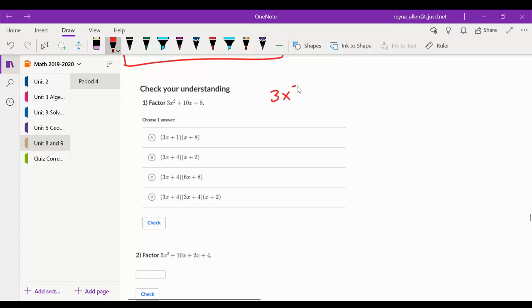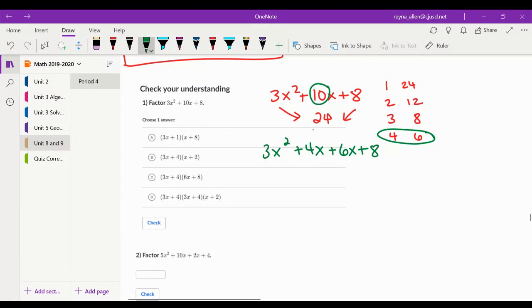So we get 3x squared plus 10x plus 8. So step number 1, multiply a and c, 24. Factors of 24, we got 1 times 24, we got 2 times 12, we got 3 times 8, and then we got 4 times 6. So one of these needs to add up to 10. Well, it's not going to be that one, it's not going to be that one, it's not going to be that one. So it's going to be this one. So we are going to split 10x into 4x and 6x. So 3x squared plus 4x plus 6x plus 8. Same thing. I just split apart the 10.